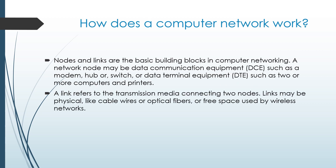How does a computer network work? Nodes and links are the basic building blocks in computer networking. A network node may be a data communication equipment (DCE) such as a modem, hub, or switch, or data terminal equipment such as two or more computers and printers. A link refers to the transmission media connecting two nodes. Links may be physical, like cable wires or optical fibers, or free space used by wireless networks.